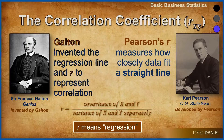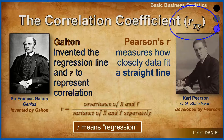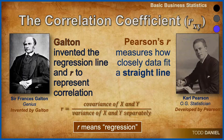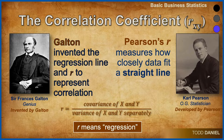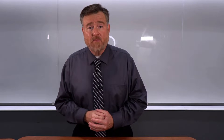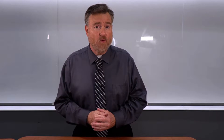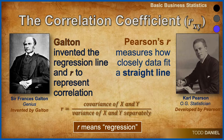Here's a quick history lesson. The correlational coefficient, which we will abbreviate as r sub xy, indicating the correlation between variables x and y, was created by Sir Francis Galton, who like Wile E. Coyote was a genius. Sir Francis Galton invented the regression line and r to represent correlation. Remember that r stands for regression — not relationship. That is a very common mistake.